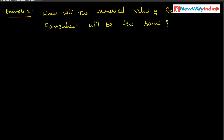What is given here: the Celsius scale value and the Fahrenheit scale value are equal. Let x degree Celsius be equal to x degree Fahrenheit. These two are equal. When will they be equal? Consider the relation between them: C divided by 5 is equal to F minus 32 divided by 9. Substitute these values — the C value is x and the F value is x.